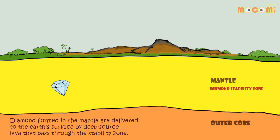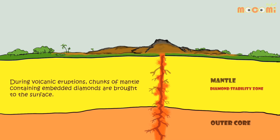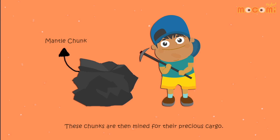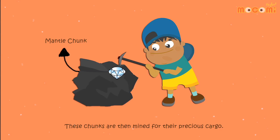Diamonds formed in the mantle are delivered to the earth's surface by deep source lava that pass through the stability zone. During volcanic eruptions, chunks of mantle containing embedded diamonds are brought to the surface. These chunks are then mined for their precious cargo.